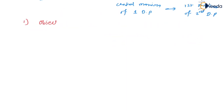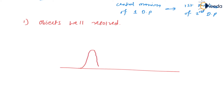The first condition is: objects are well resolved. Here I'll draw the graph. The first diffraction pattern has a central maxima, with secondary maxima and minima on each side. The second diffraction pattern also has a central maxima — suppose the wavelength for the first is lambda 1 and this is lambda 2. Here the central maxima of both diffraction patterns are widely separated from each other. So we can say these two wavelengths are well resolved and we get two images; we can see those objects clearly.